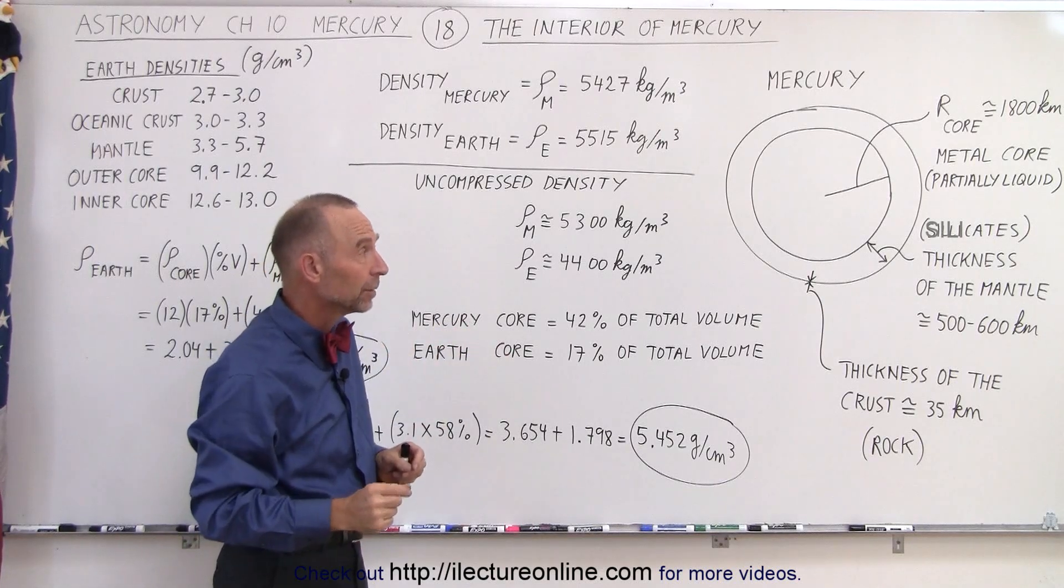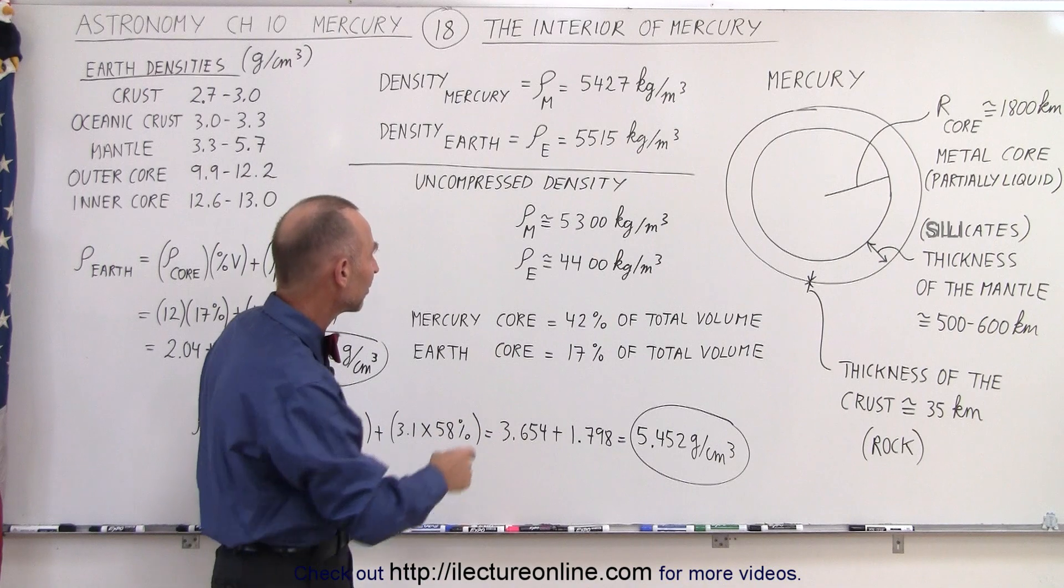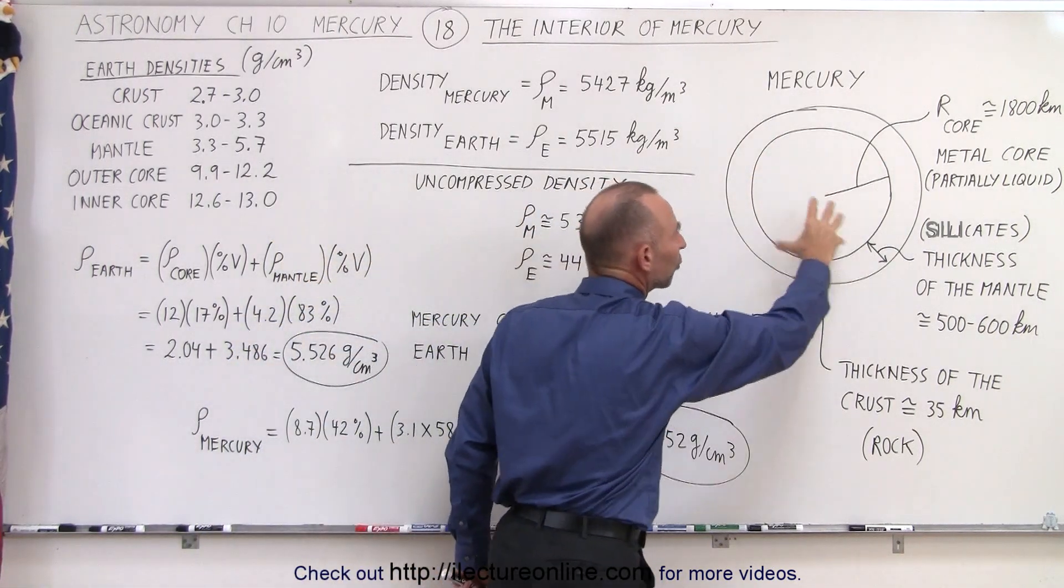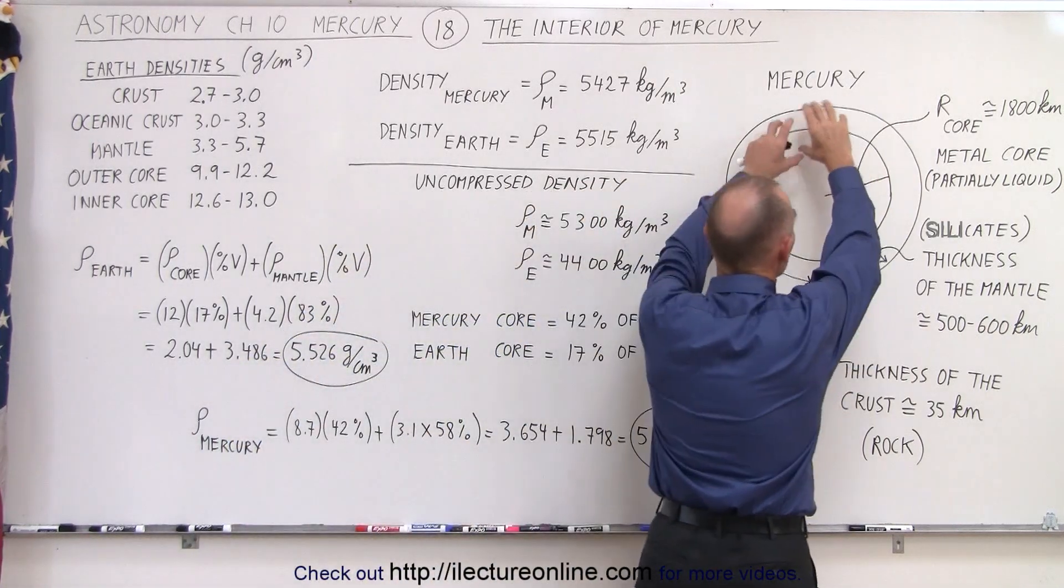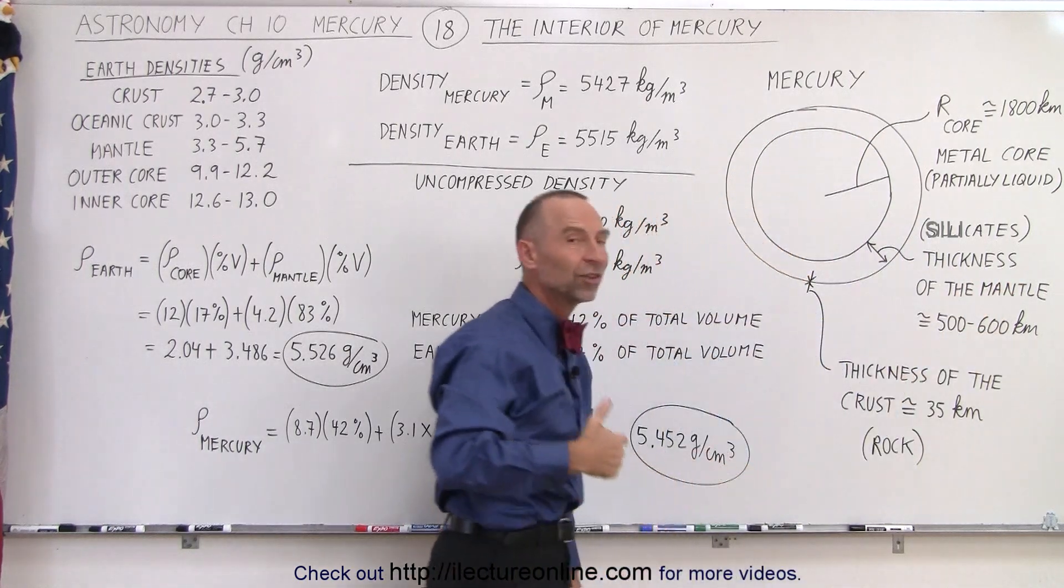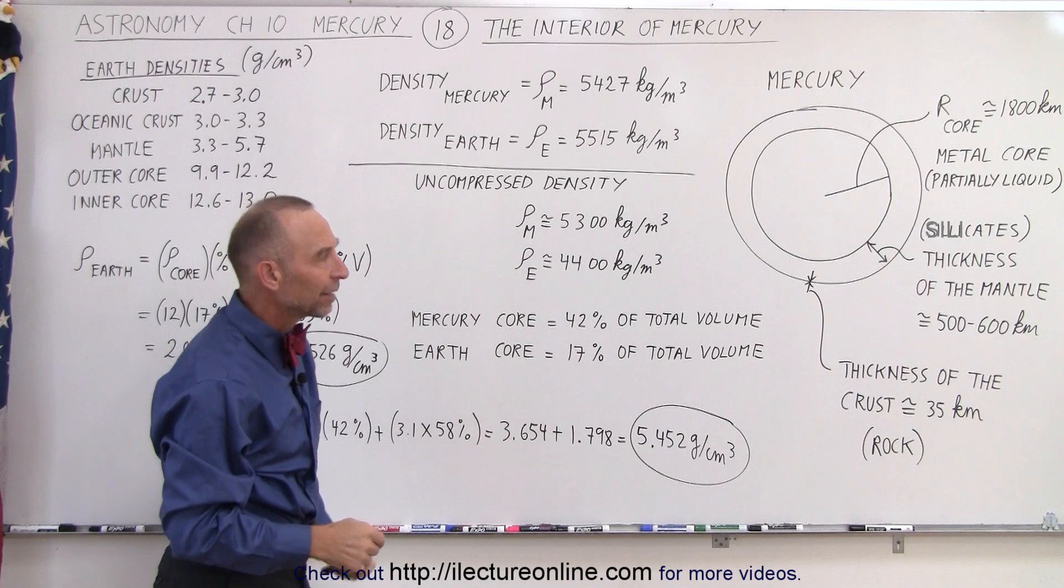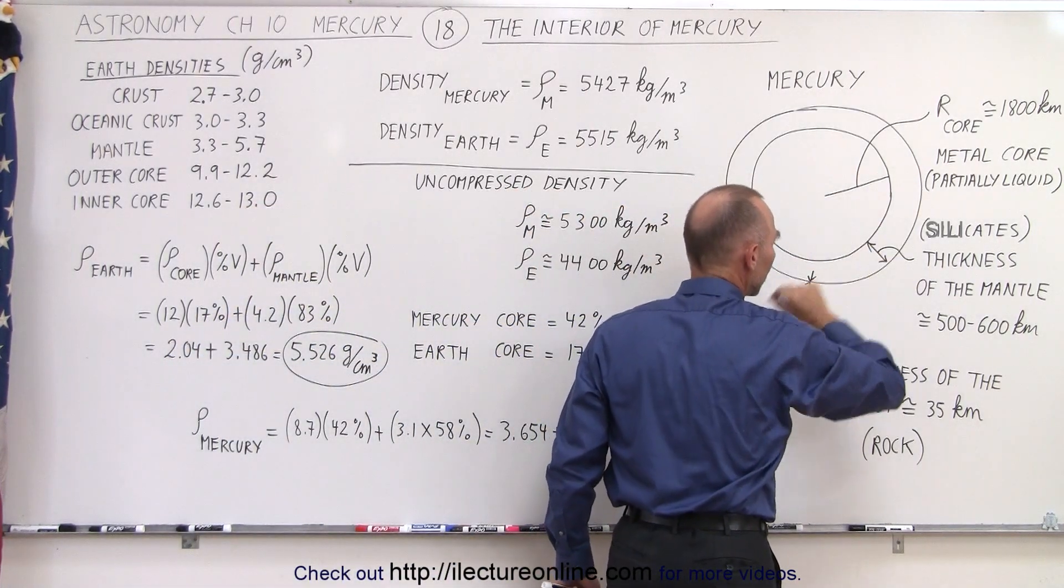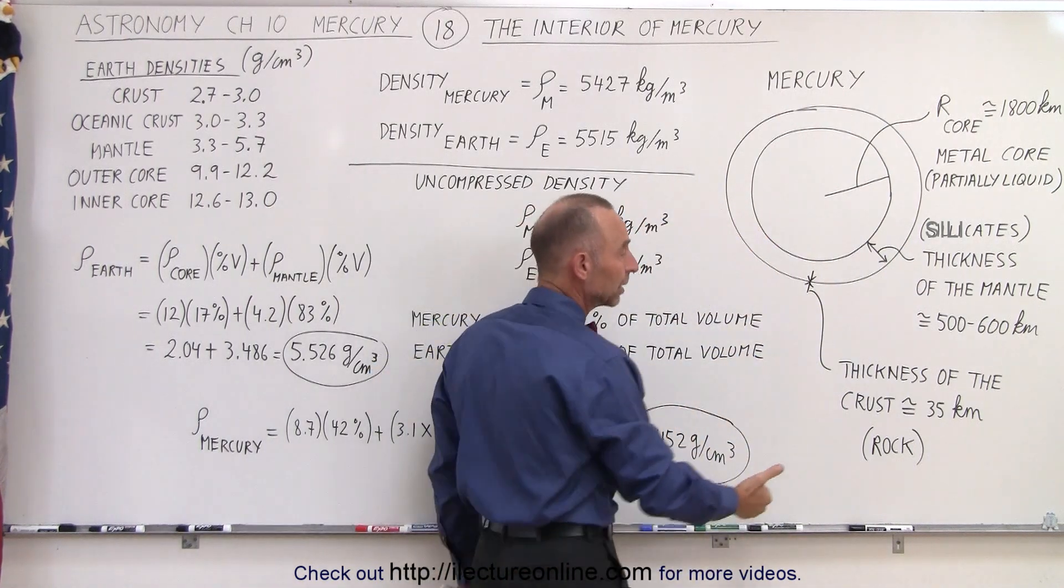When we calculate the volume of that, we then realize that the Mercury core occupies about 42 percent of the total volume of the planet. The remainder is taken up by the mantle around the core, which is primarily made out of silicate, silicon dioxide, and various minerals. At the very edge of the planet, around the mantle, we have what we call a crust that's primarily made of solidified rock.